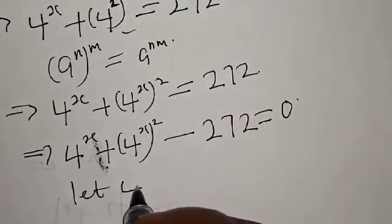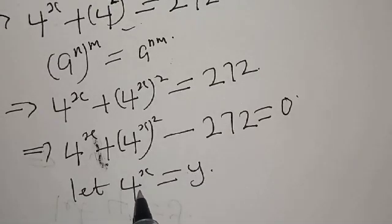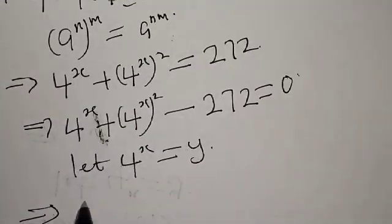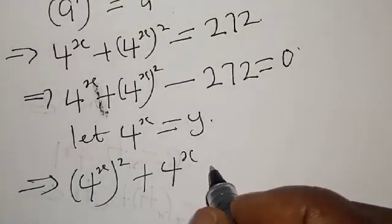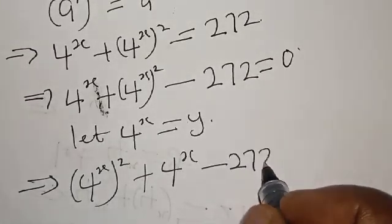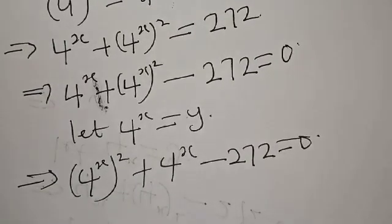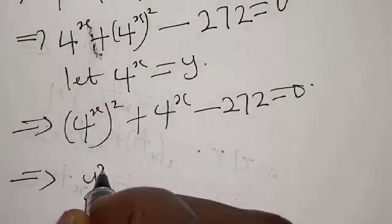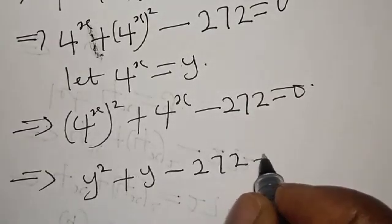Let's rearrange this first. This can be written as 4 raised to power x squared plus 4 raised to power x minus 272 equals 0. Now substitute: anywhere you see 4 raised to power x, put y. This implies that we have y squared plus y minus 272 is equal to 0.